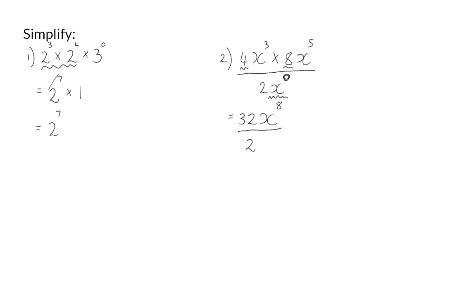Note that it is not the whole 2x to the power of 0 that becomes 1. Only the base that has the exponent of 0 becomes 1. So here we have 2 times 1, which is simply 2. Next, I can divide, and 32 divided by 2 is 16, and that is still multiplied by x to the power of 8.